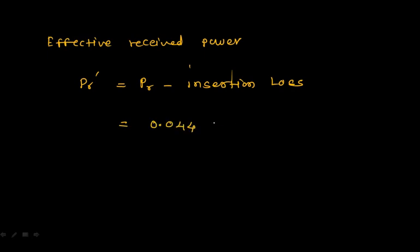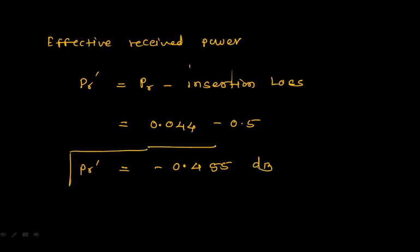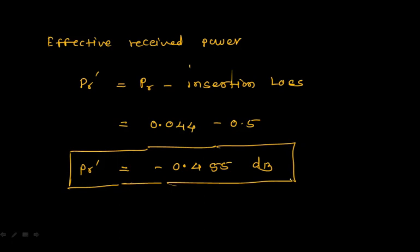Since insertion loss of 0.5 dB is also given, the effective received power = 0.044 − 0.5 = −0.455 dB. When calculating received power, distribute the input into forward and back power, subtract from total, then account for insertion loss. This completes the problems on passive microwave components — once you understand the scattering matrix, you can solve any problem based on these passive components.